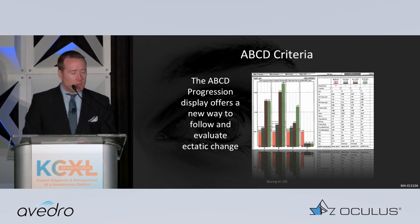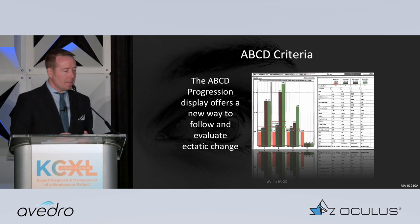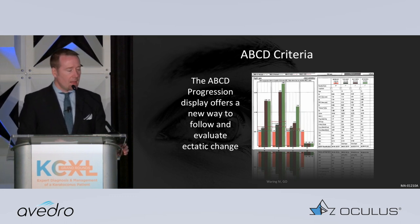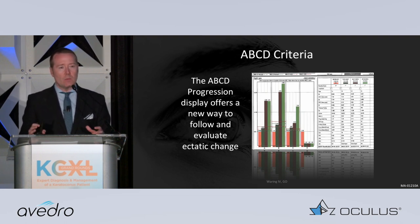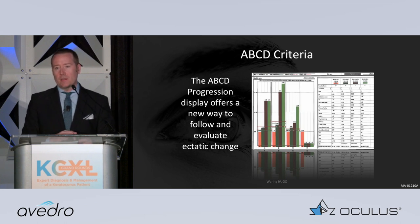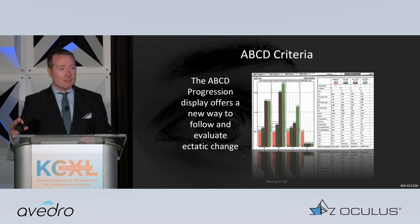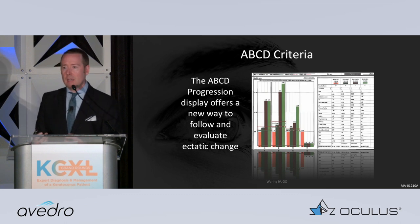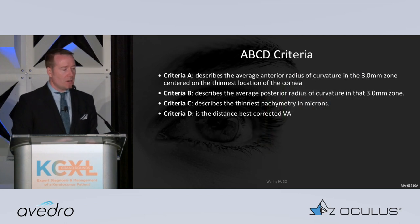This is probably the most elegant way to document both progression to stability and see regression in a single shot — it's really the only way I know how to do it: the ABCD display available on the Pentacam HR. Some of this is good to hear a second time because it can be a little complicated and not intuitive on the first pass. Most simply, these are four different ways to look at how the patient's doing.